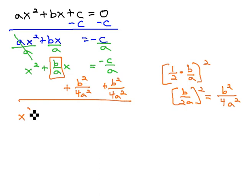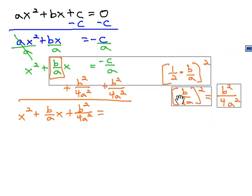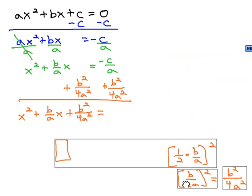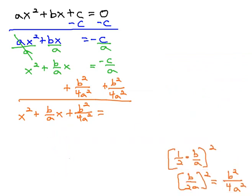This gives us x squared plus b over ax plus b squared over 4a squared equals... Well, in order to add these, let me get this stuff out of the way here. In order to add these together, we need a common denominator.